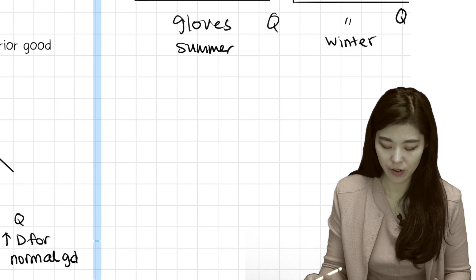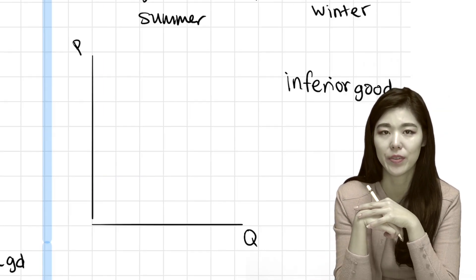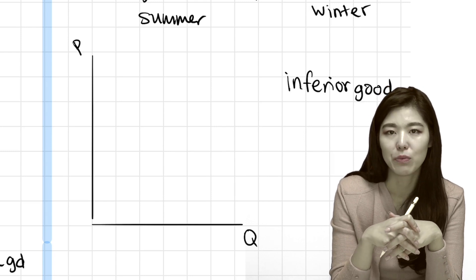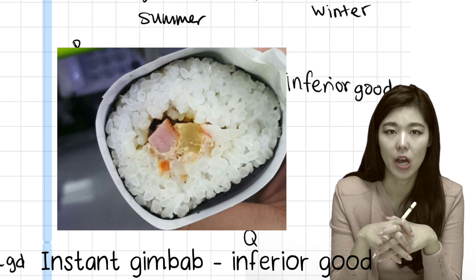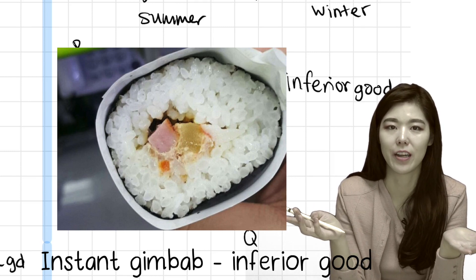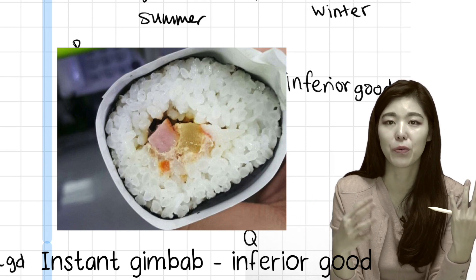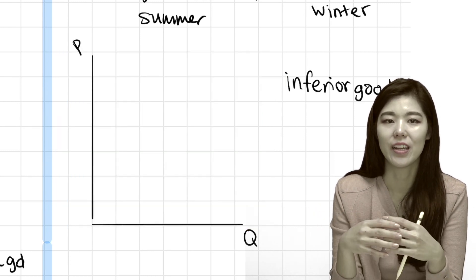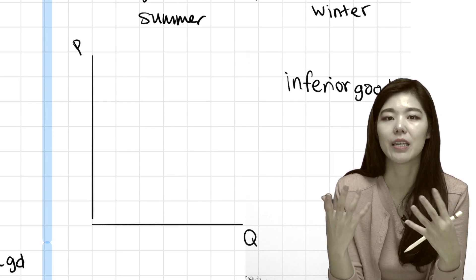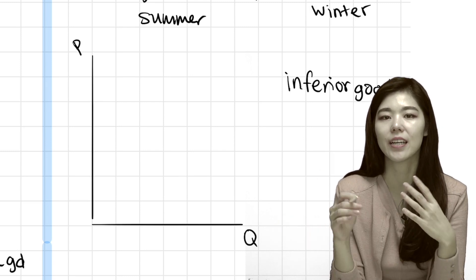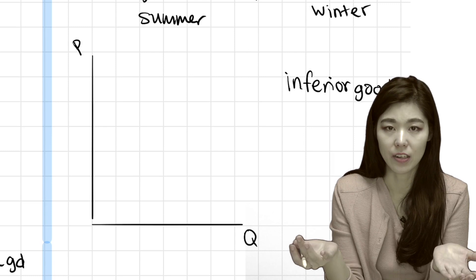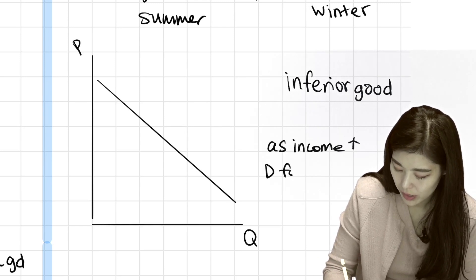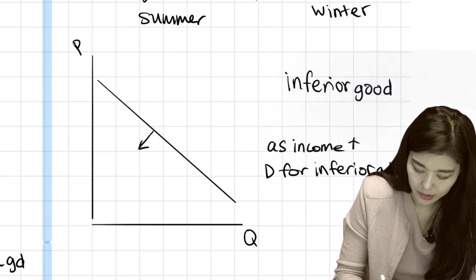But what about inferior goods? An inferior good is something you won't buy if you have more income. For example, when I was in university I didn't have much money, so I'd eat instant noodles and instant kimbap for dinner — basically $3 per dinner. As I earned more money I could afford a decent restaurant, so I never buy instant kimbap or instant noodles anymore. They are inferior goods for me. So when income increases, demand for inferior goods decreases and shifts to the left — like secondhand goods. If you're earning more money, you don't need to buy cheap goods just because of their price.